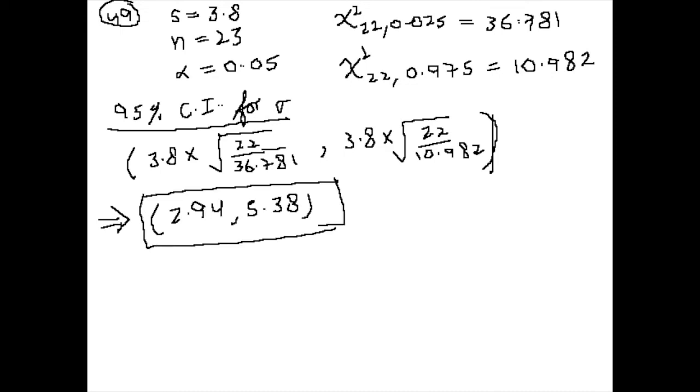The question was, are the customer concerns valid? The customer concerns were that the variability has increased from 3.5 to something higher. If you look at this band from 2.94 up to 5.38, the 3.5 value is well within this range. That means standard variation has in fact not changed. Statistically, we can conclude with 95% confidence that it has not increased to a higher value than 3.5.